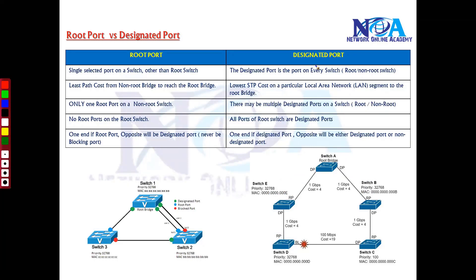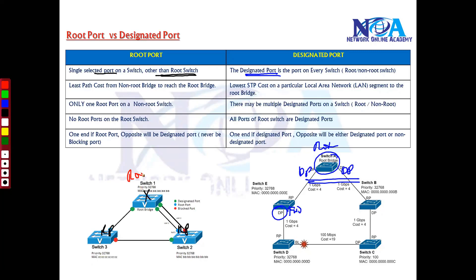The designated port is present on every switch, which means you have a designated port that will be in the forwarding state and it will be present on the root bridge as well. The root port is present on every switch other than the root bridge, so on the root bridge you will not have a root port. The designated port is also the shortest or forwarding path, but it is present on every switch — even all ports of the root bridge will be designated by default.